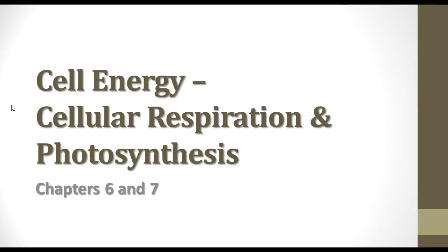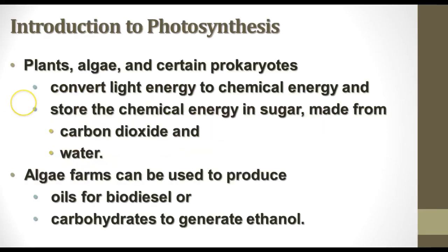As we continue our study of cell energy, we're now going to focus on photosynthesis. Remember that there are certain kinds of organisms like plants, algae, and some kinds of prokaryotes that are able to do photosynthesis — to use light energy from the sun and convert it to chemical energy, storing it in sugars made from carbon dioxide and water. We can use this in a number of different ways; for example, algae farms can produce oil for biodiesel or carbohydrates to make ethanol for fuel.